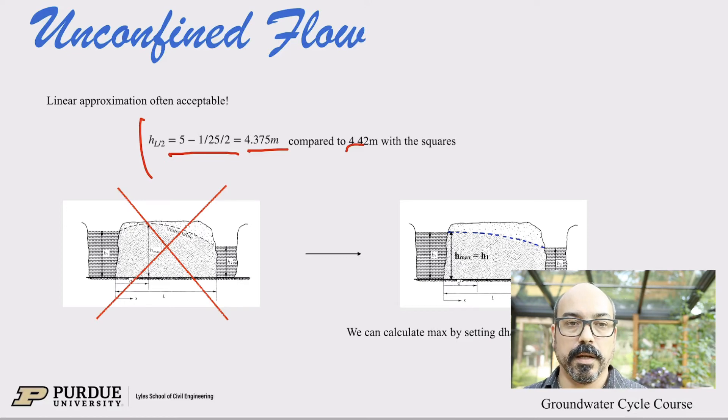So in a lot of cases, in a lot of practical cases, even for unconfined aquifers, we take that linear assumption or that linear approximation and say, this is good enough. So again, mathematically, it's not quite correct. It's not strictly correct, but if you look at the difference, the practical difference here, we're looking at four or five centimeters out of 4.4 meters. So it's not a big difference.